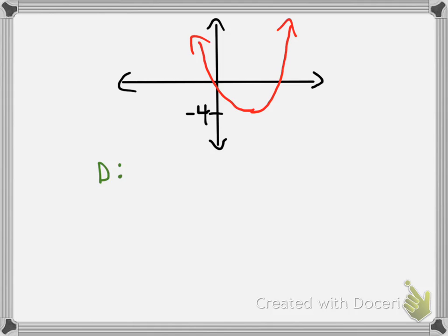When talking about the domain of the parabola, hopefully you can see that the function is going to continue forever in this direction and forever in this direction as well. So the domain is going to be composed of any possible x value you can come up with. The way of saying that is: we do our set bracket and then say x ∈ ℝ, which stands for 'x is an element of the real number system' — another way of saying every possible x value.